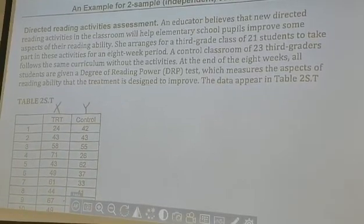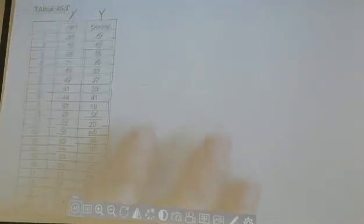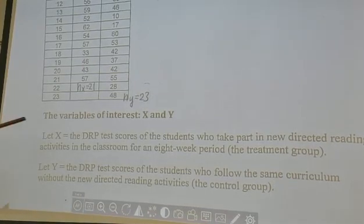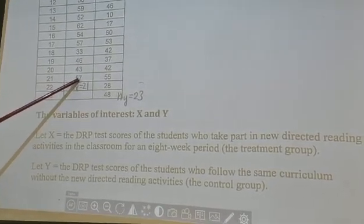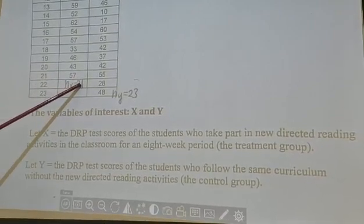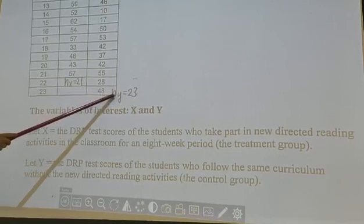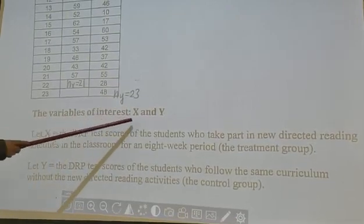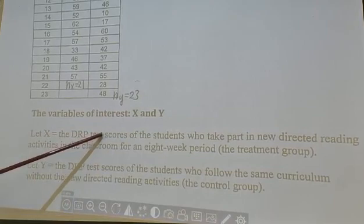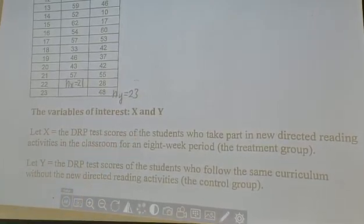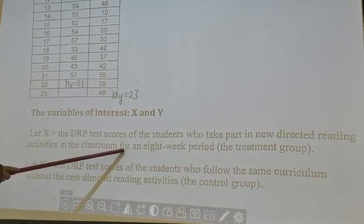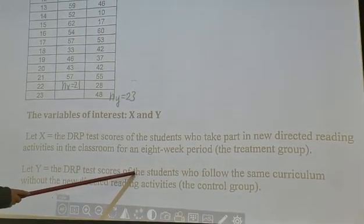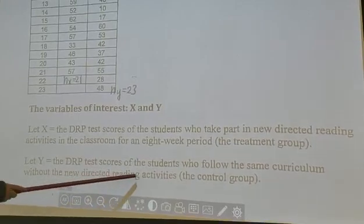Let's take a quick look at the data. The treatment group is called x, and the control group is called y. The sample size for the treatment group, nx, is 21, and for the control group, ny, is 23. Let x be the DRP test score of students who take part in the new directly reading activities in the classroom for an eight-week period — this is the treatment group. Let y be the DRP test scores of students who follow the same curriculum without the new directly reading activity — this is the control group.